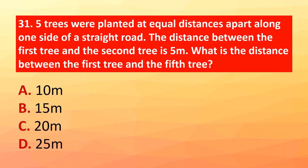Achievers Section — choose the appropriate options. Question 31: Five trees were planted at equal distances along one side of a straight road. The distance between the first and second tree is 5 meters. What is the distance between the first and fifth tree? The correct answer is option C: 20 meters.